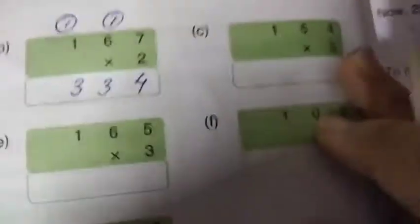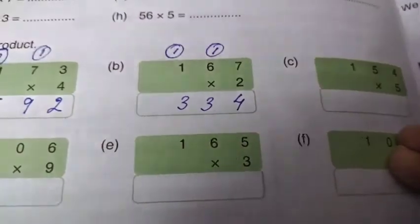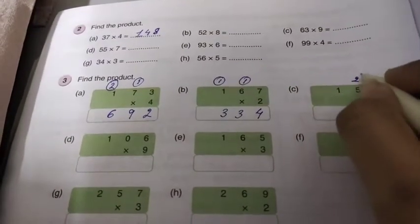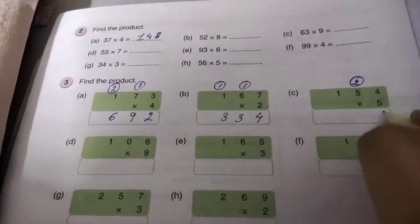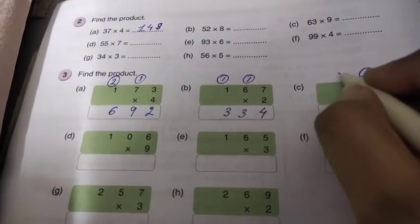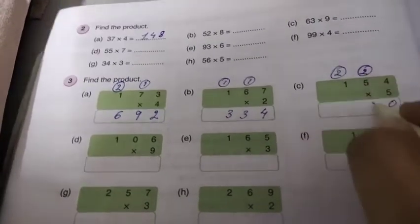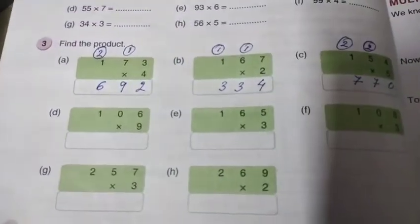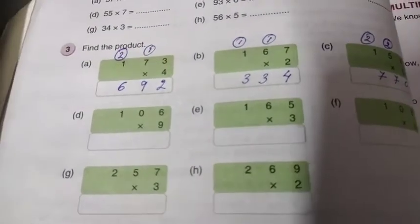The next one: 5 4's are 20 — write 0, carry 2. 5 5's are 25, plus 2 equals 27 — write 7, carry 2. 5 1's are 5, plus 2 equals 7. So 770 will be your answer.